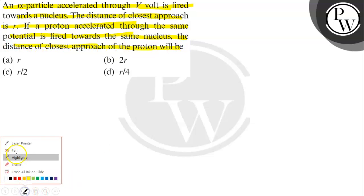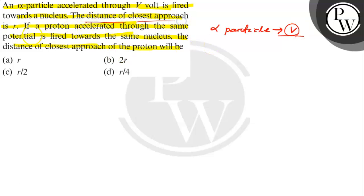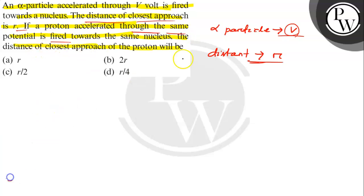So here an alpha particle is accelerated through the potential difference V and fired towards the nucleus. The distance of the closest approach is given as R. If the proton is accelerated through the same potential V and fired towards the same nucleus, what will be the distance of closest approach?